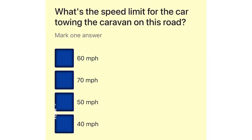What's the speed limit for the car towing the caravan on this road? 60 mph. 70 mph. 50 mph. 40 mph.